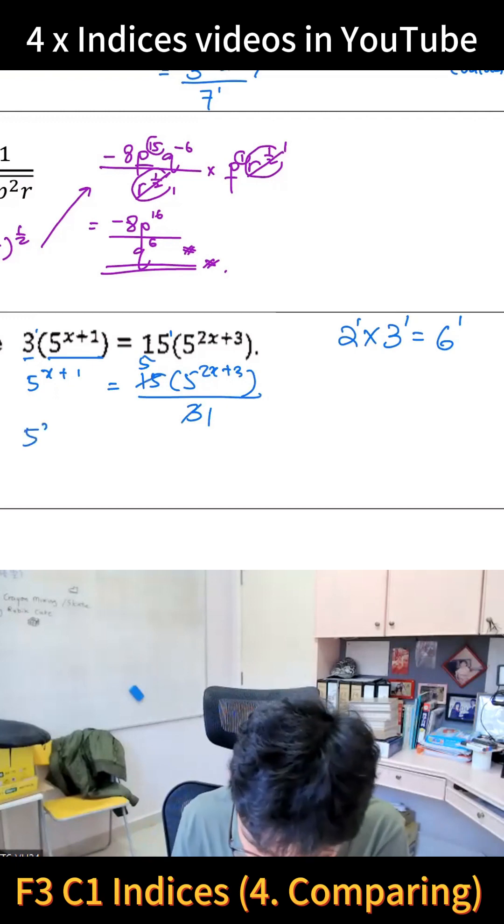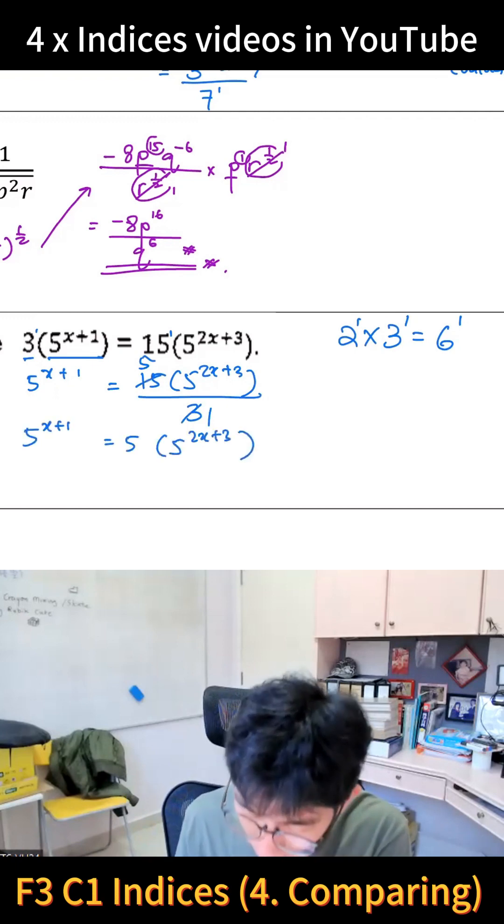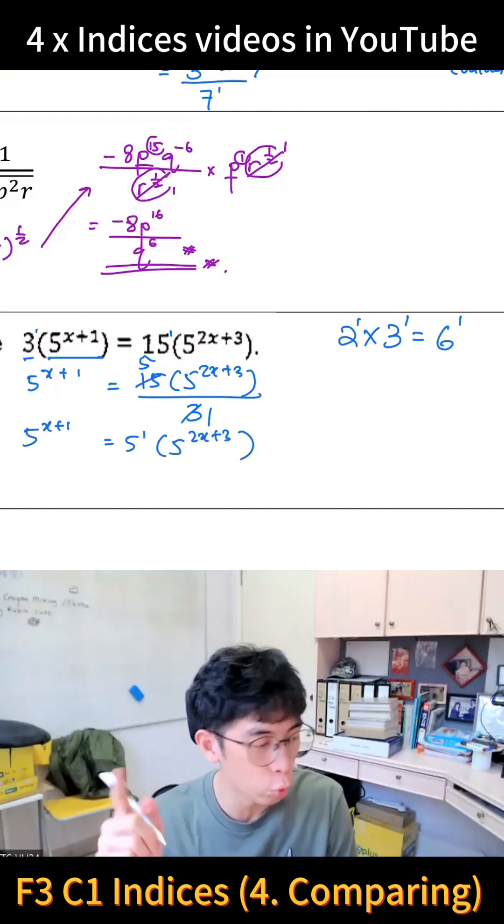So can you see there's a 5 there? The 5 is actually 5 power 1. Everyone tell me, same base - what can you do to the index? You can plus them, right? So we're going to start adding them.